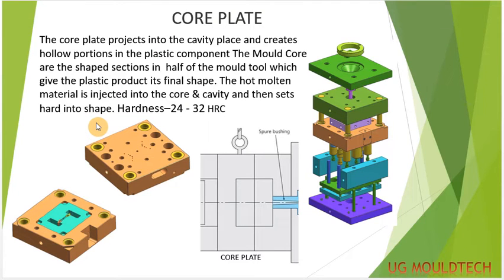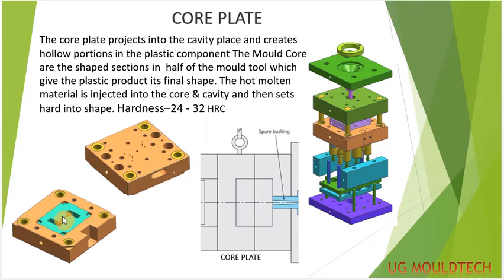Next we move to the core plate. Basically, the core plate projects into the cavity plate to create the hollow portion in the plastic component. The mold core is the shaped section half of the mold which gives the plastic product its final shape. The whole material will be injected into the core and cavity, then cooled, and the final product is formed. Now we can see the core insert of the mold.